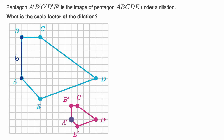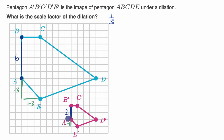Now what about the corresponding side from A' to B'? That length is equal to two. So we went from a length of six to a length of two, meaning you multiply by one third. So our scale factor is one third. You can confirm this by looking at points A and E: the change in Y is negative three and change in X is positive three, while for A' and E' the change in Y is negative one and change in X is one — each one third of the original — confirming a scale factor of one third.